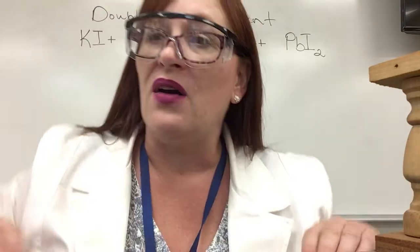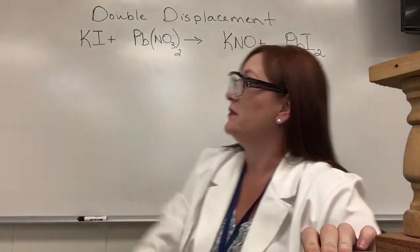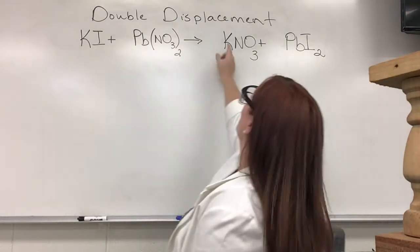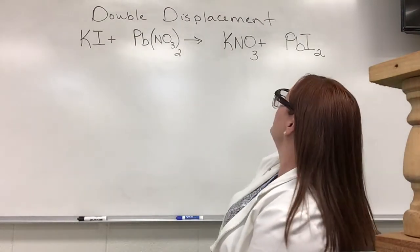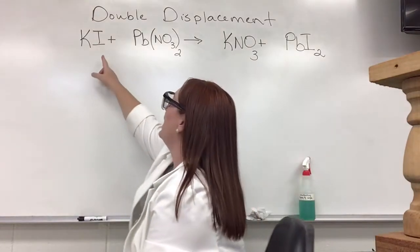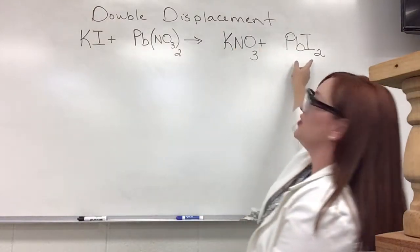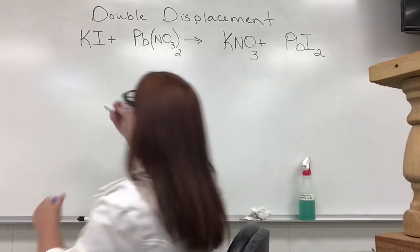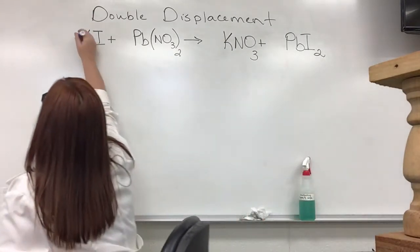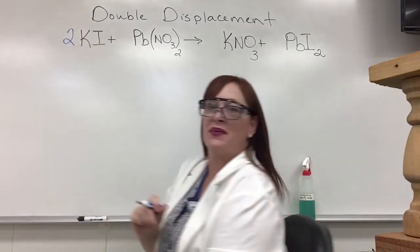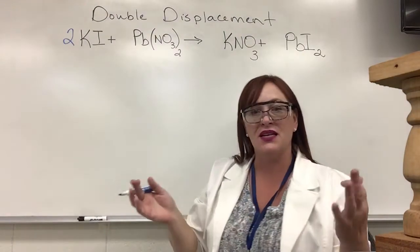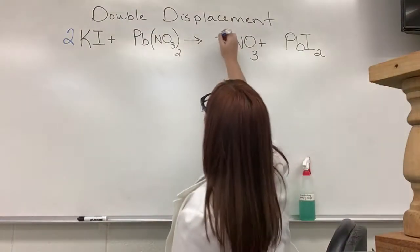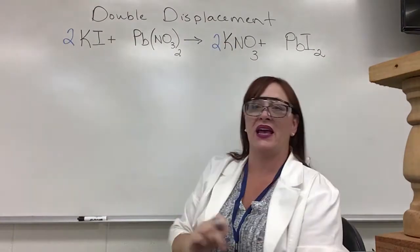I've got one K — so that's balanced. I've got one I and I've got two I's so that needs to be balanced. Let me go over here and add a two in front of my potassium iodide. Now that does mess up my K's, so I need to go over here and fix the K's.